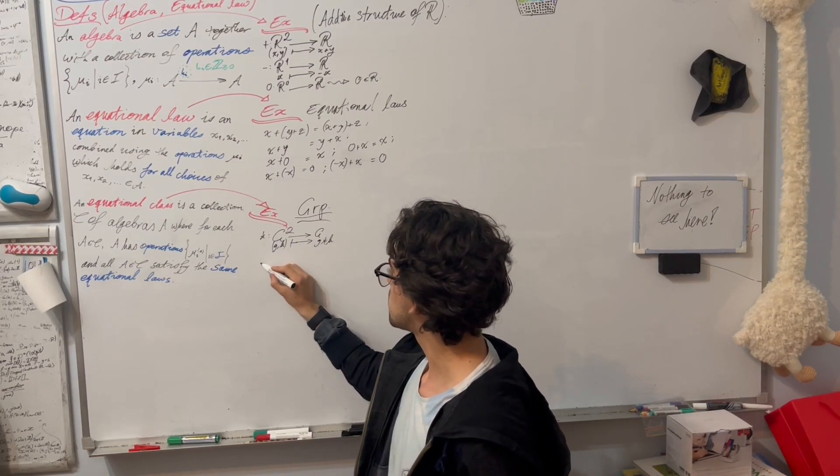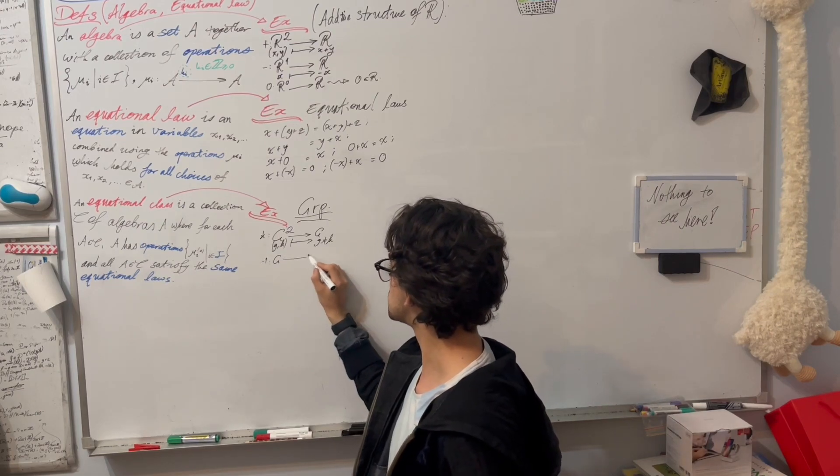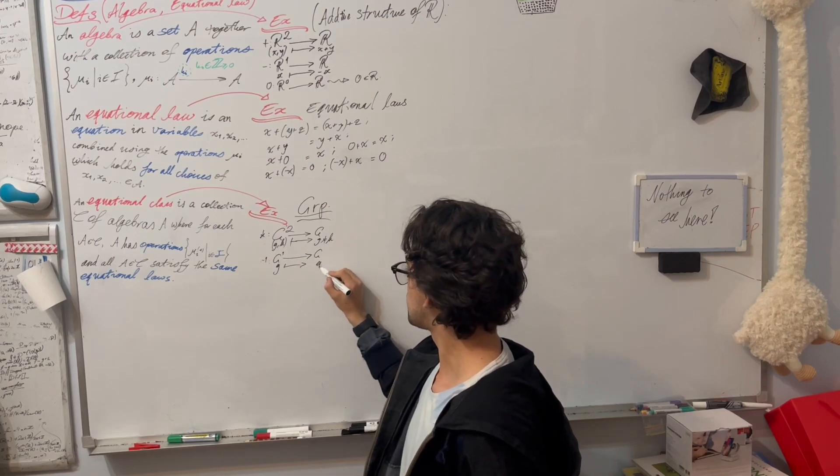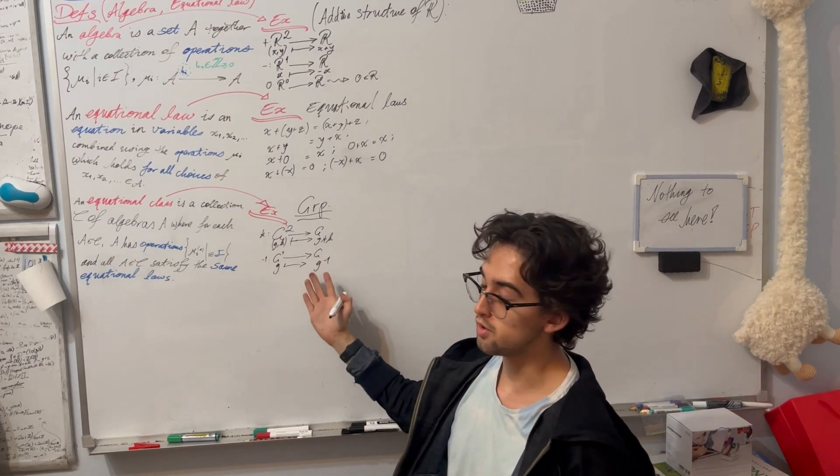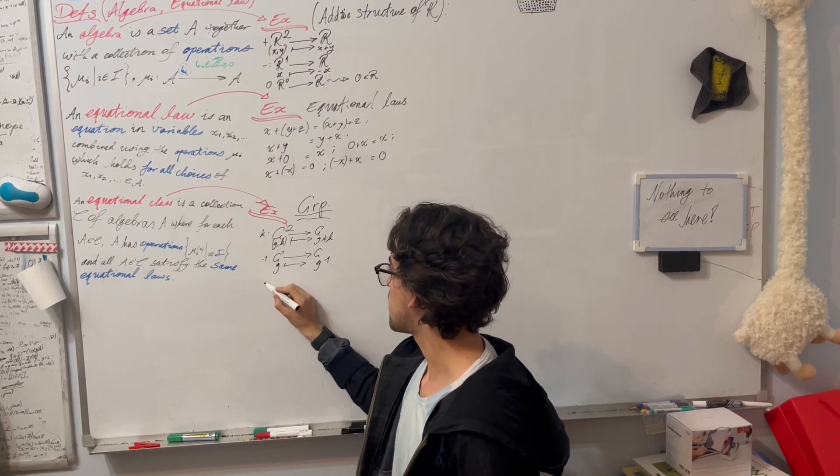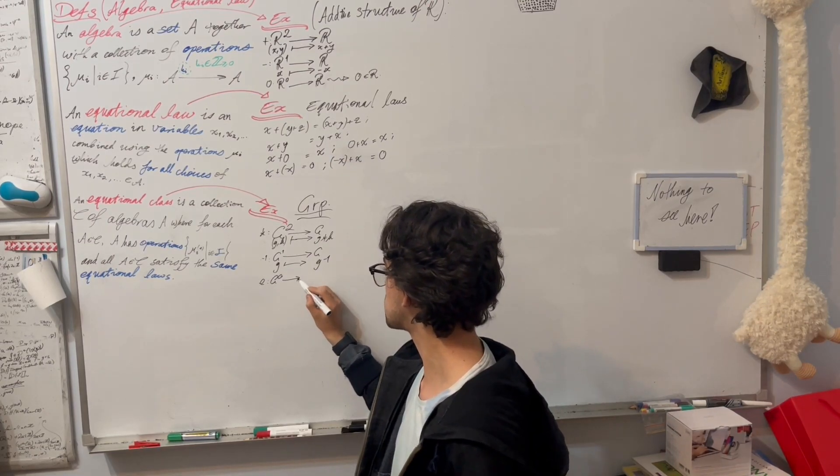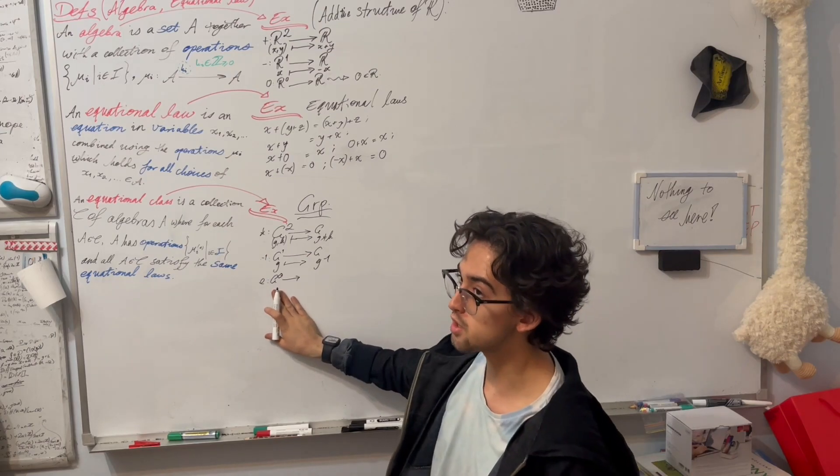We have inversion, which takes G^1 to G, which sends g to g inverse. And we also have the nullary operation e, which we can think of as going from G^0 back to G.